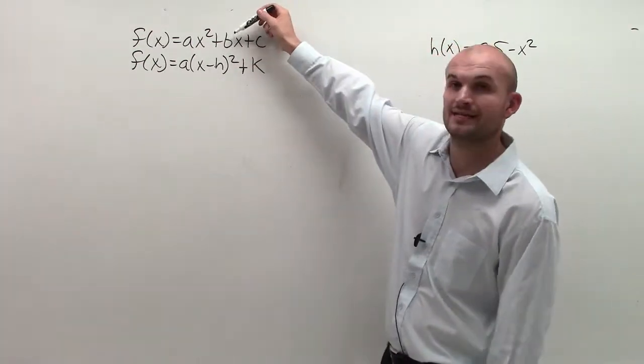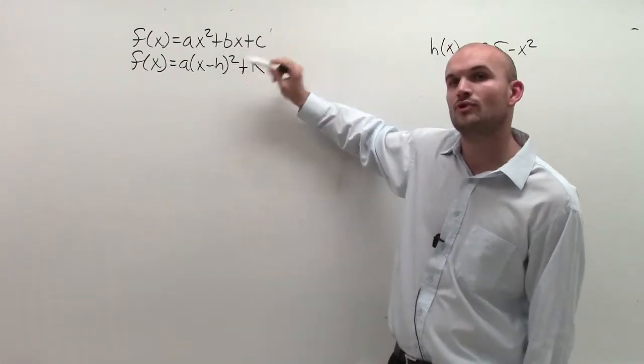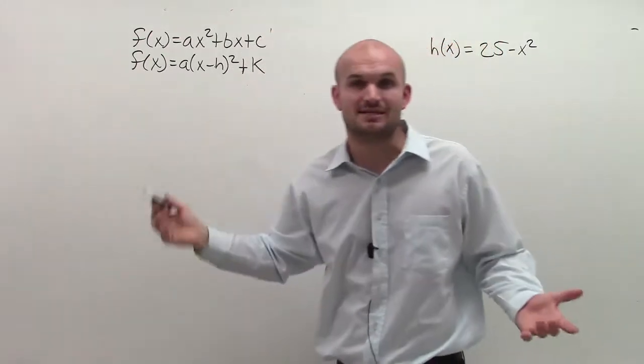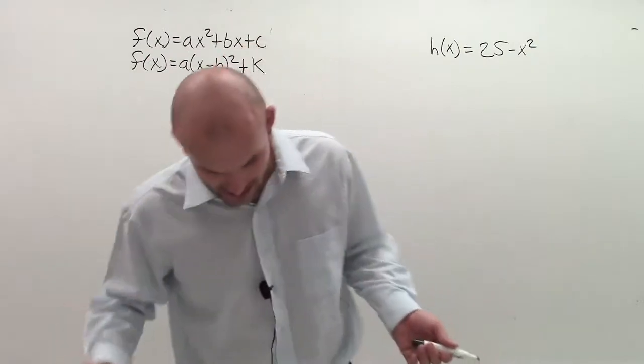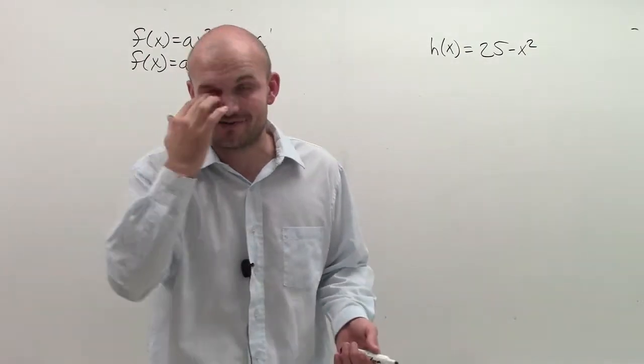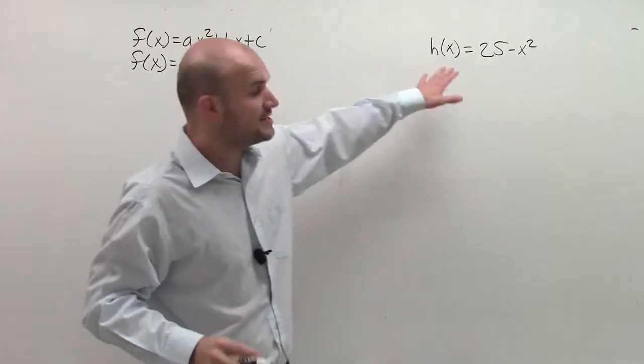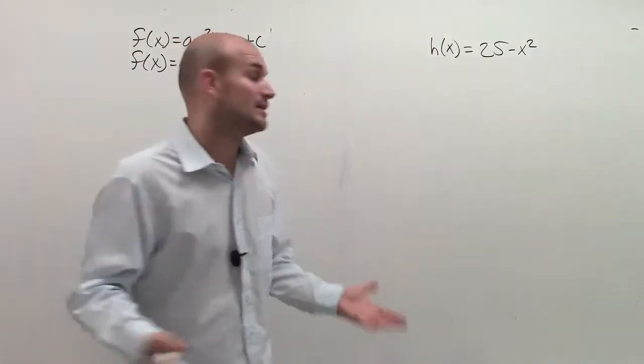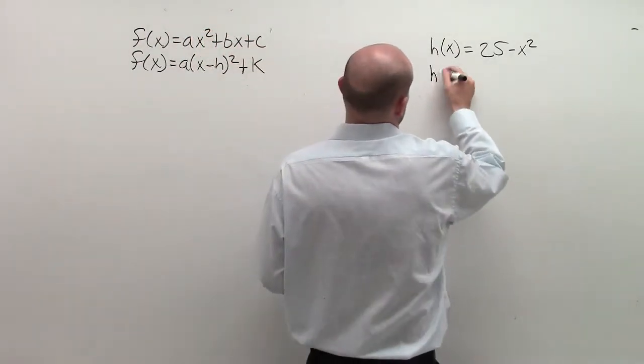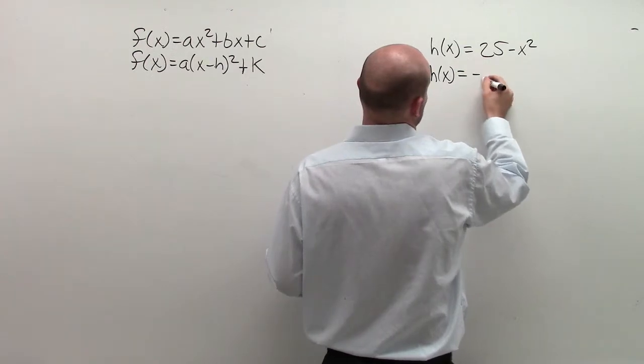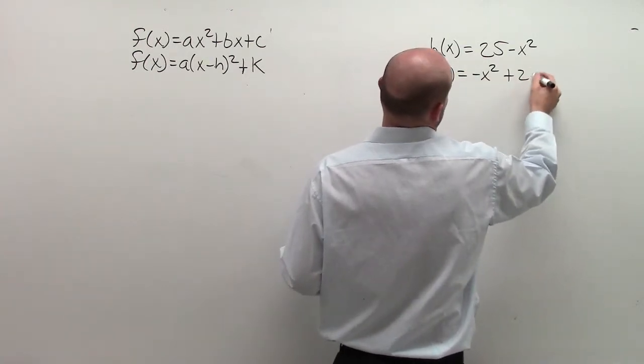So if we can take a quadratic in this form and put it in this form, it's very easy for us to be able to find the vertex. The problem sometimes is putting it in that second form. For this one, the first thing we want to do is make sure we put it in quadratic form. So here what I have is h(x) equals negative x squared plus 25.